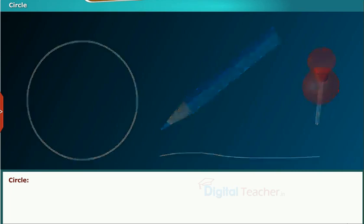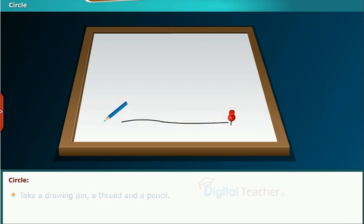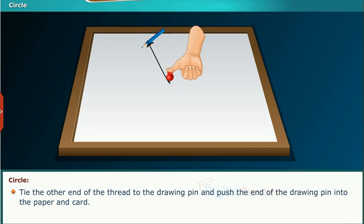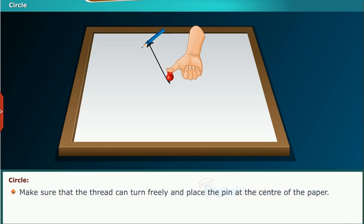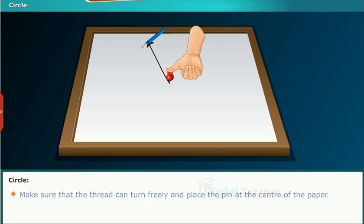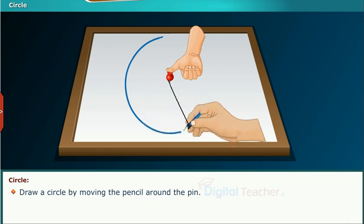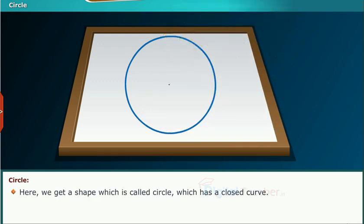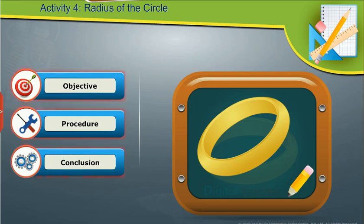Now let us draw a circle with the help of thread and pencil. Place a paper over a cardboard. Take a drawing pin, a thread and a pencil. Tie one end of the thread to the pencil, tie the other end of the thread to the drawing pin and push the end of the drawing pin into the paper and board. Make sure that the thread can turn freely and place the pin at the center of the paper. Draw a circle by moving the pencil around the pin. Here we get a shape which is called circle which has a closed curve.